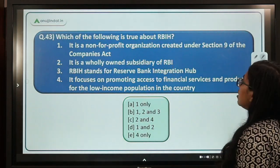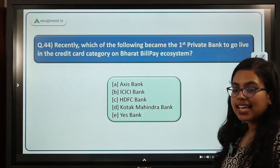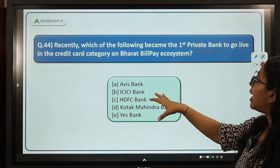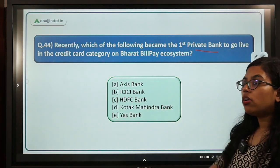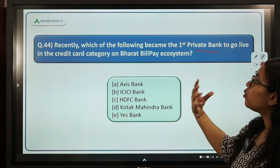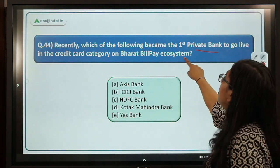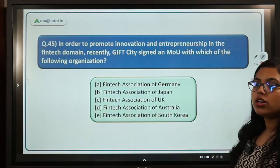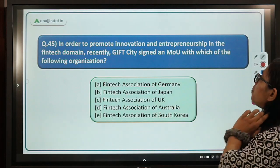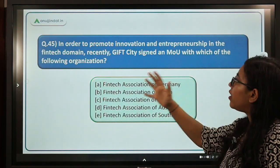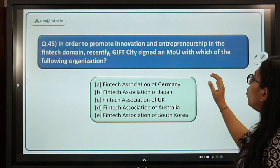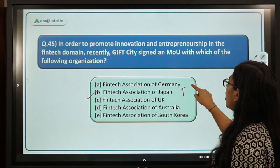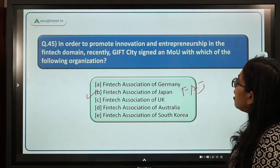Question 44 asks: which private bank recently became the first to go live in the credit card category on Bharat Bill Payment System? It is Kotak Mahindra Bank. Question 45 asks: to promote innovation and entrepreneurship in the fintech domain, Gift City signed an MOU with which organization? The correct answer is the Fintech Association for Payments and Commerce Japan (FAPJ). Question 46 asks: which organization has been set up for dispute resolution at Gift City? Any dispute arising in Gift City is handled by the Singapore International Arbitration Centre, not the Supreme Court of India.